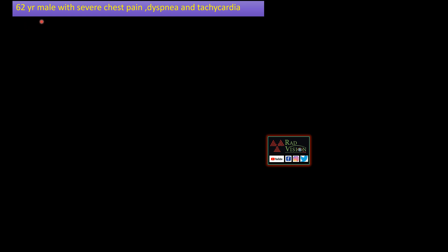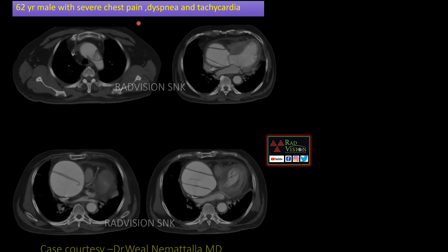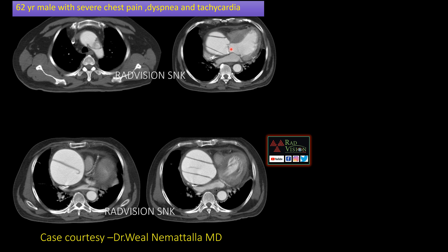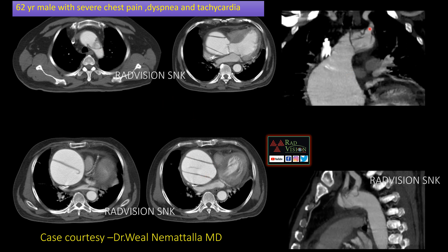Next case: 64-year-old male with severe chest pain, dyspnea, and tachycardia. There is abnormal dilatation of the ascending aorta with dissection extending into the arch of the aorta and its branches. There is an ascending aortic aneurysm with aortic dissection — this is the true lumen and this is the false lumen — consistent with Stanford Type A or DeBakey Type 2 aortic dissection. You can see the intimal layers forming a classical intimo-intimal intussusception extending into the branches of the aorta — this is the typical windsock sign.